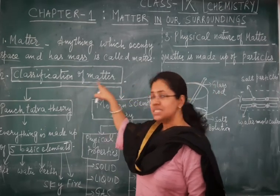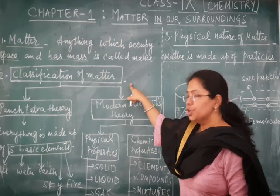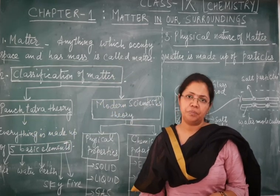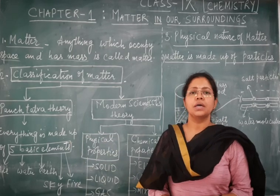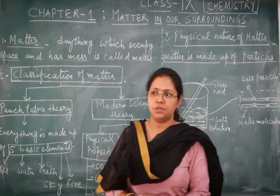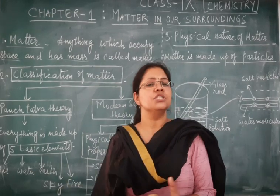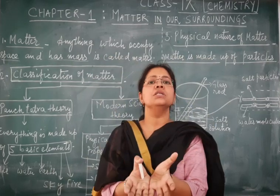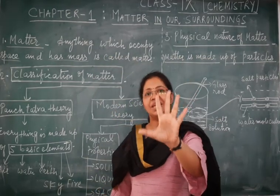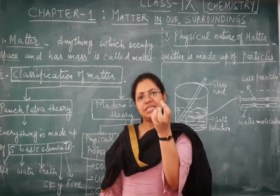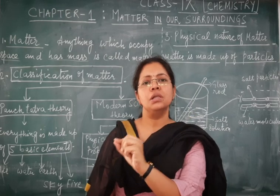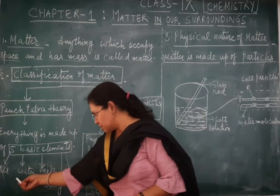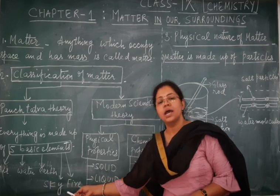Regarding the classification of matter, two theories are there. The first theory is commonly referred to as the Panch Tatva theory, and this theory was proposed by our ancient Indian philosophers. According to them, everything in this universe — whether it is a living thing or a non-living thing — is made up of five basic elements. For the word 'five' we have taken the Sanskrit numeral 'Panch.' So these five elements are air, water, earth, sky, and fire.